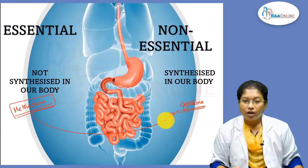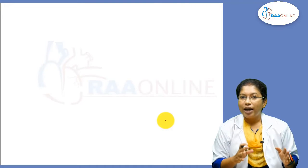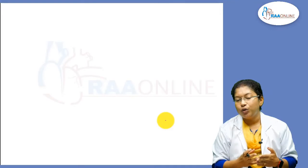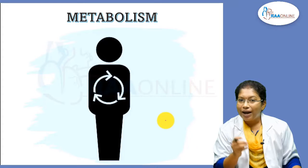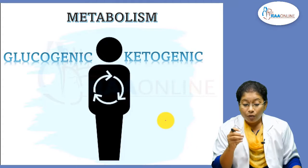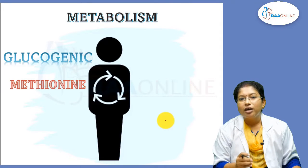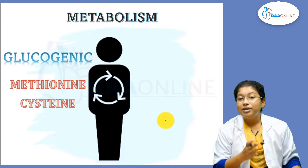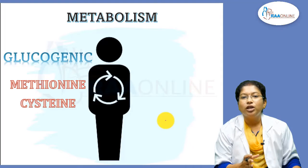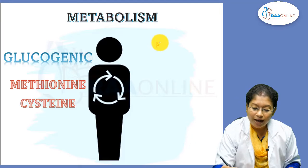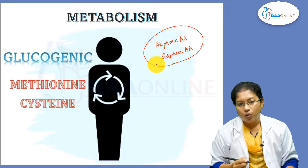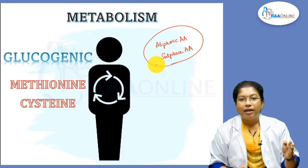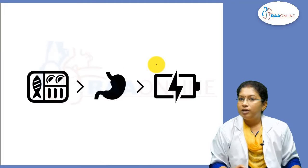Now, what about catabolism and metabolic end products? Based on the metabolic end products, amino acids can be classified as glucogenic, ketogenic, or both. Here, the metabolic end products are glucogenic and ketogenic. Your methionine and cysteine are glucogenic compounds — like glycine and alanine, they are glucogenic amino acids. That means during the end of metabolism, they can route into glucose production.